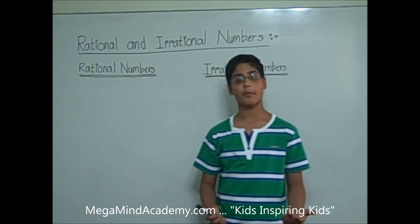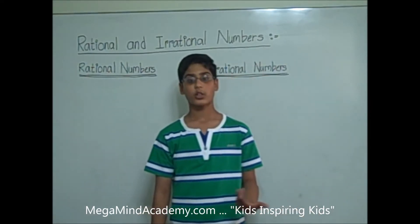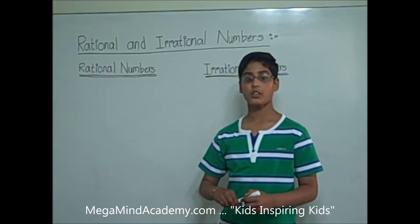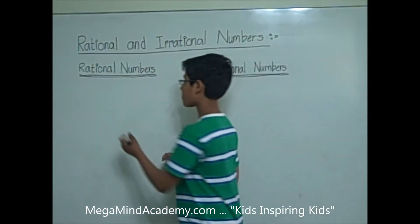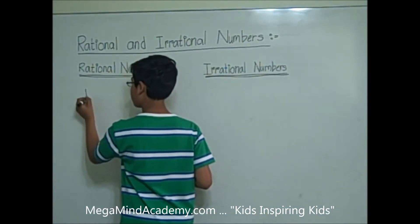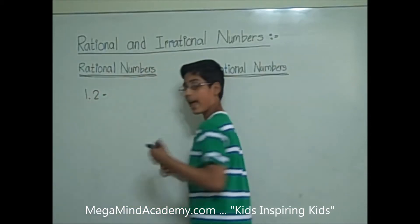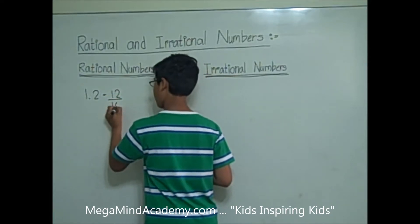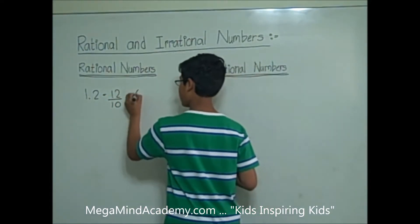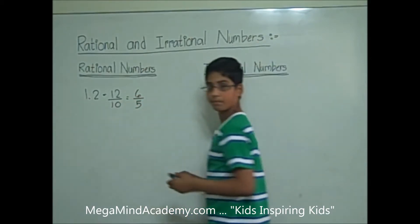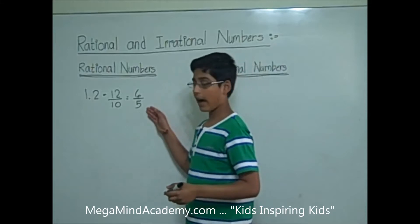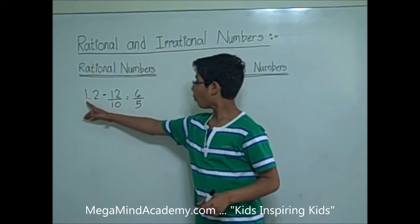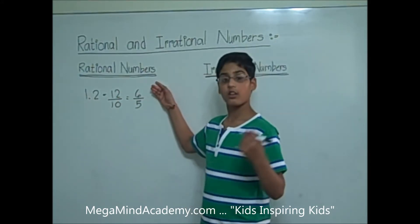Rational numbers are the numbers that can be written as a simple fraction or the ratio of two integers. For example, 1.2 can be written as 12 over 10, which is equal to 6 over 5. 6 over 5 is a simple fraction, so this means that 1.2 is a rational number.